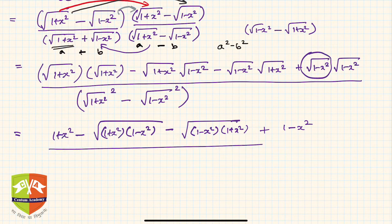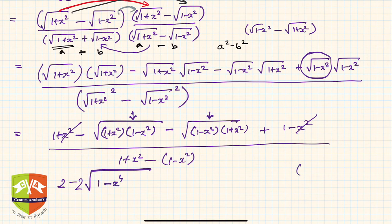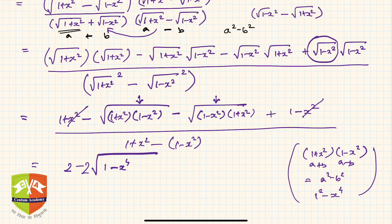So the numerator is (1+x²) - 2√((1+x²)(1-x²)) + (1-x²), and the denominator is (1+x²) - (1-x²). Simplifying: the x² terms in the numerator cancel, leaving 2 - 2√(1-x⁴), because (1+x²)(1-x²) = 1 - x⁴ by the identity (a+b)(a-b) = a² - b². The denominator becomes 2x². Dividing through by 2, we get (1 - √(1-x⁴)) / x².